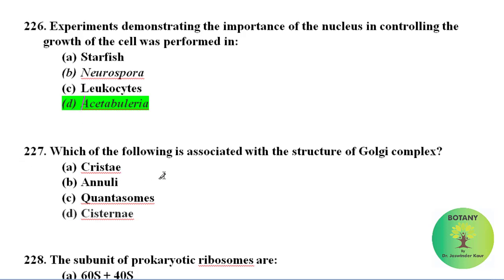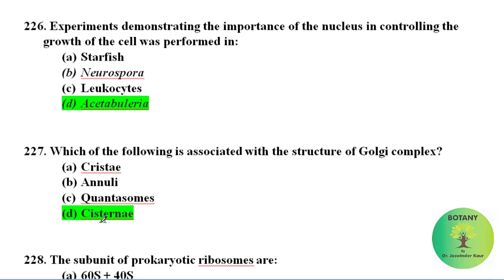Which of the following is associated with the structure of the Golgi complex? Among these, cisternae are associated with the structure of the Golgi. Many students get confused by cristae and cisternae. Cristae are present on the inner membrane of mitochondria, while cisternae are flattened membrane discs on the endoplasmic reticulum and Golgi apparatus. So the structure associated with the Golgi complex is cisternae.